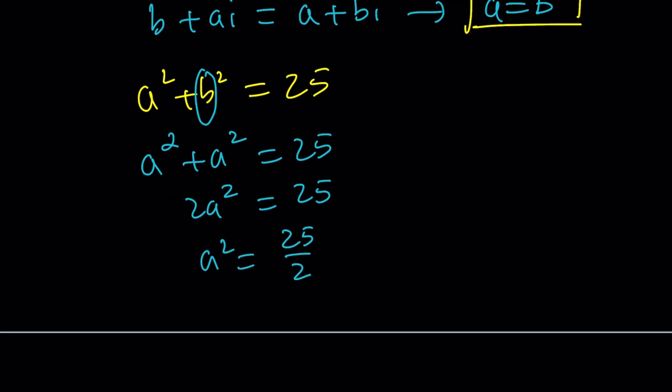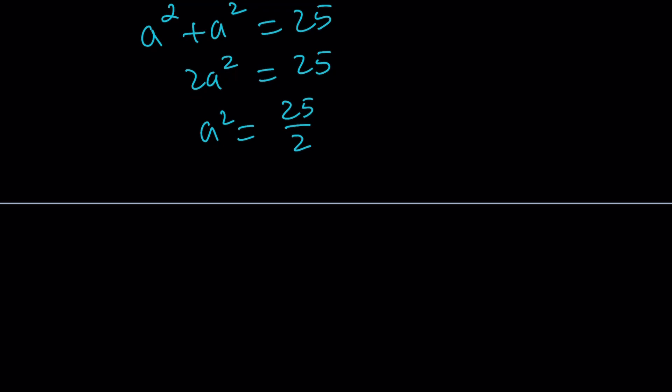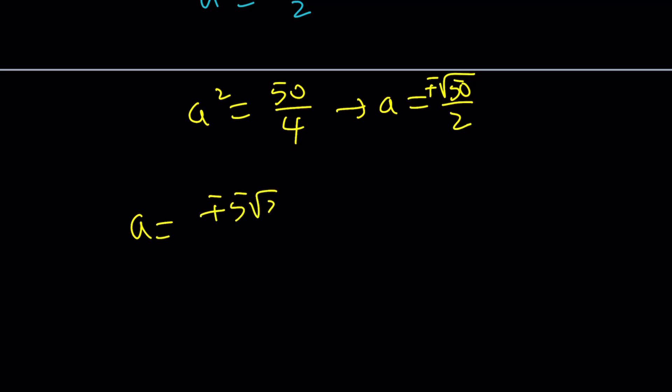You might want to square root both sides at this point. If you don't like rationalizing the denominator, just double the top and the bottom and write this as 50 over 4. So you have a perfect square at the bottom. Now we can square root it. A is going to be the square root of 50 divided by 2 with a plus minus sign. But square root of 50 is basically 5 root 2. So this can be written as plus minus 5 root 2 over 2. But since a and b are equal, b is also going to be plus minus 5 root 2 over 2.